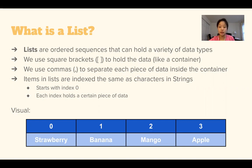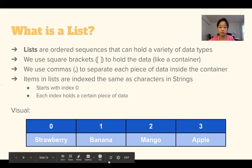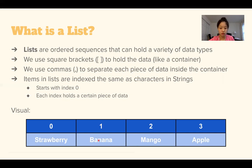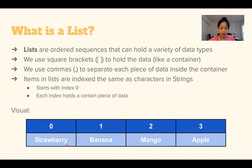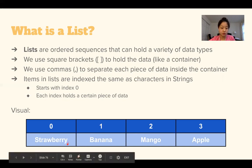Items in lists are indexed the same as characters in strings. The first item starts with index zero and each index holds a certain piece of data. Here we have a visual example of a list. We have four items in this list and each one is indexed. The first element, which contains strawberry, is index zero, then banana is index one, and so on.